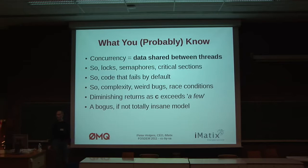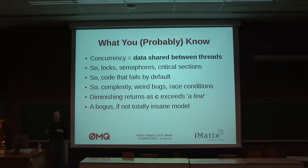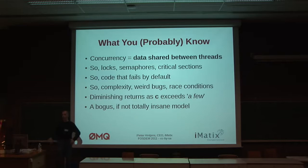What we've been taught is that concurrency is data shared between threads. We're not really used to thinking of concurrency as multiple boxes or multiple processes. So we have these threads that try to share data and prevent conflicts using locks and semaphores. And this code basically fails by default — when you share data it seems to work, but as you scale it fails. The more you load your system, the more it fails. Your diminishing returns hit at about four or eight threads.